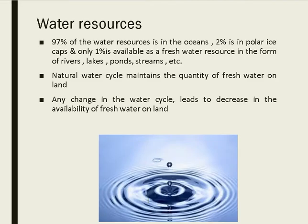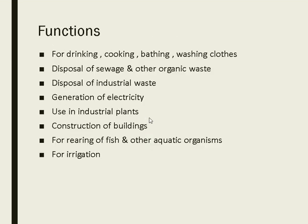Moving to water resources: 97% of water is in the ocean, 2% is in polar ice caps, and only 1% is available as fresh water. Water resources are maintained by the natural water cycle, and any change in the water cycle leads to a decrease in the availability of fresh water.